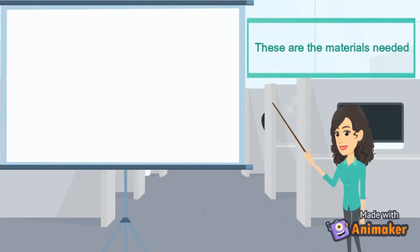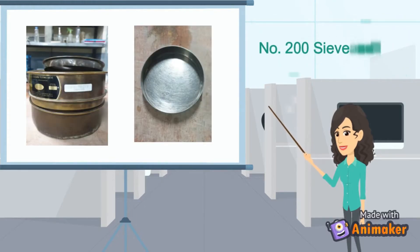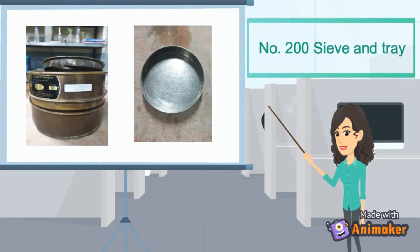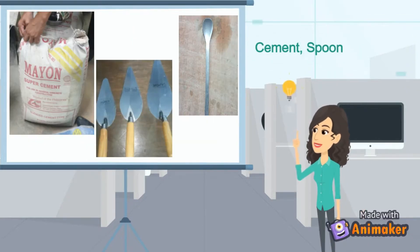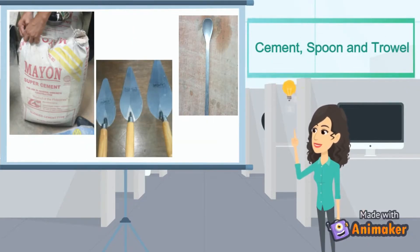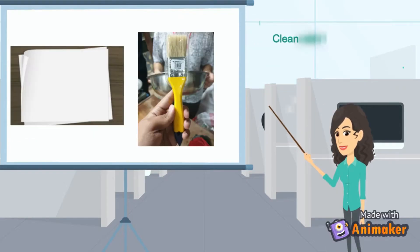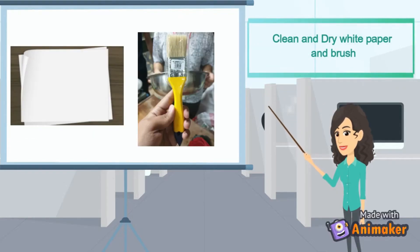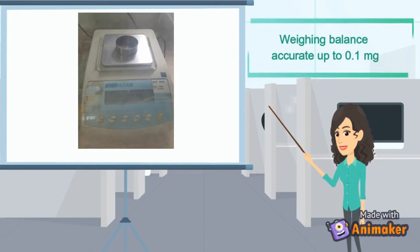These are the materials needed: number 200 sieve and tray, cement, spoon, and trowel, clean and dry white paper and brush, and a weighing balance accurate up to 0.1 mg.